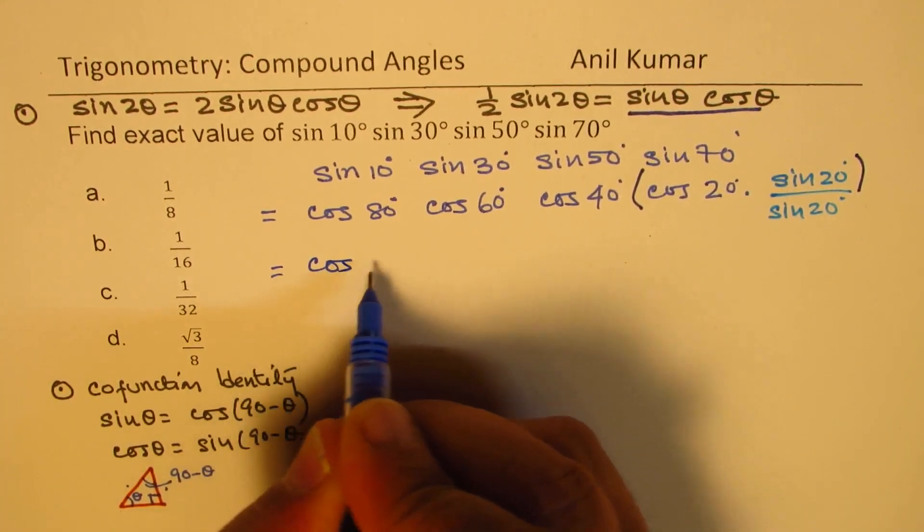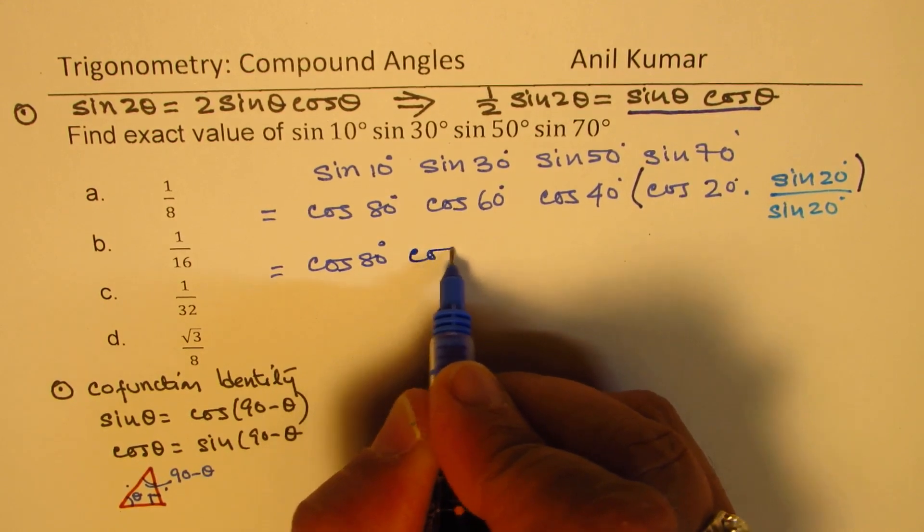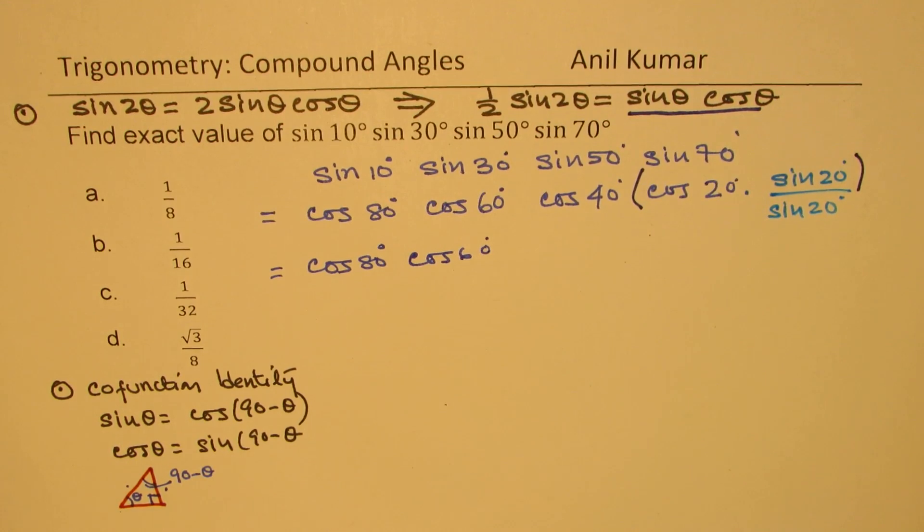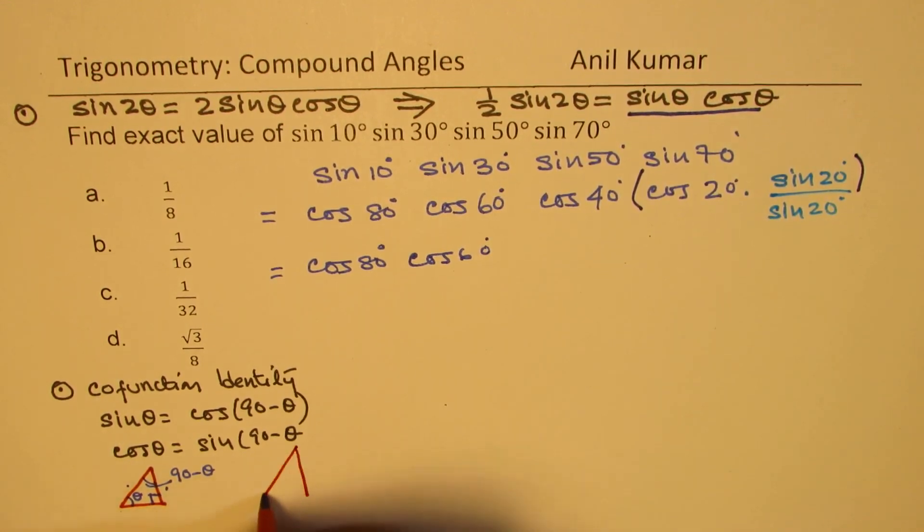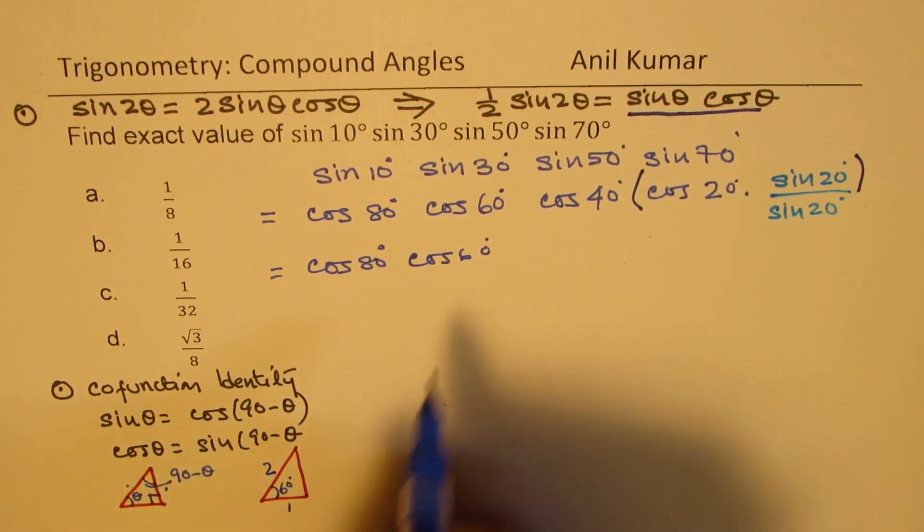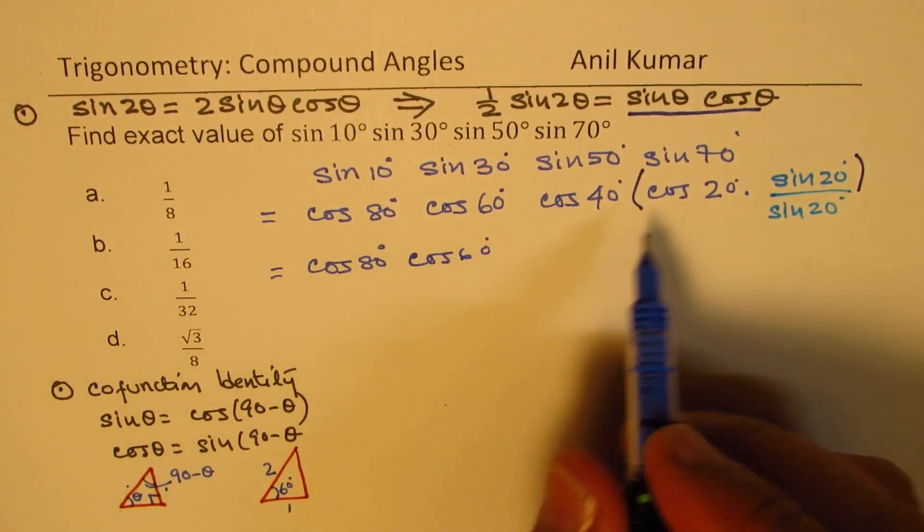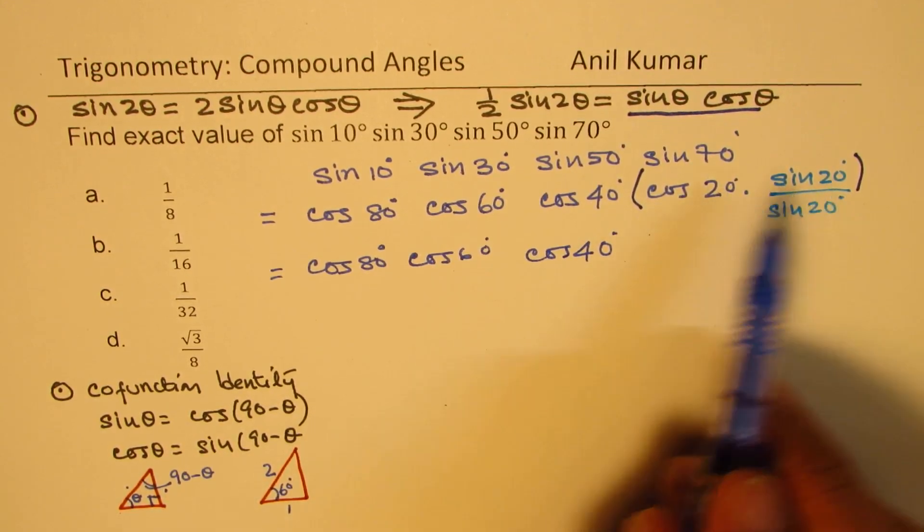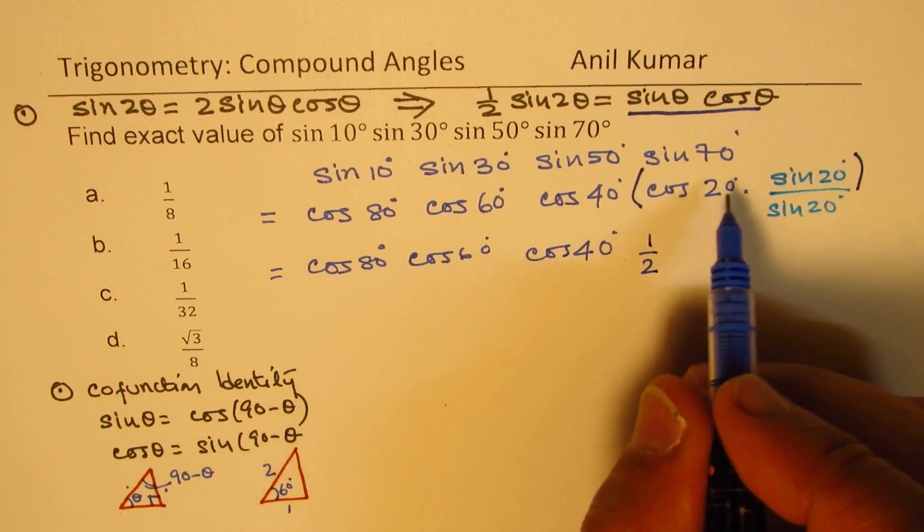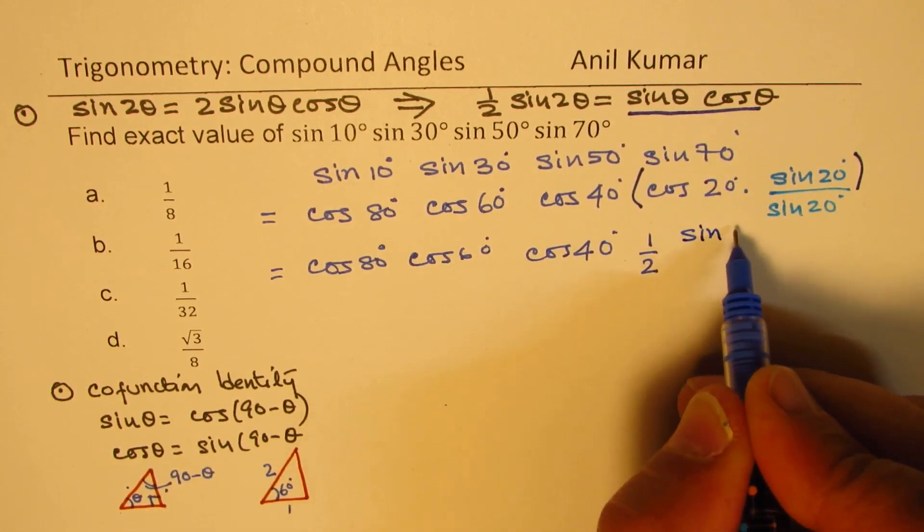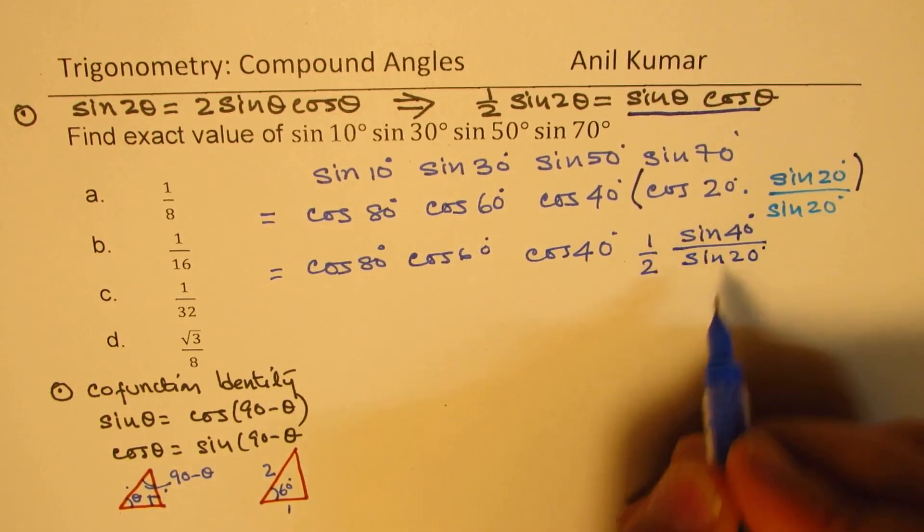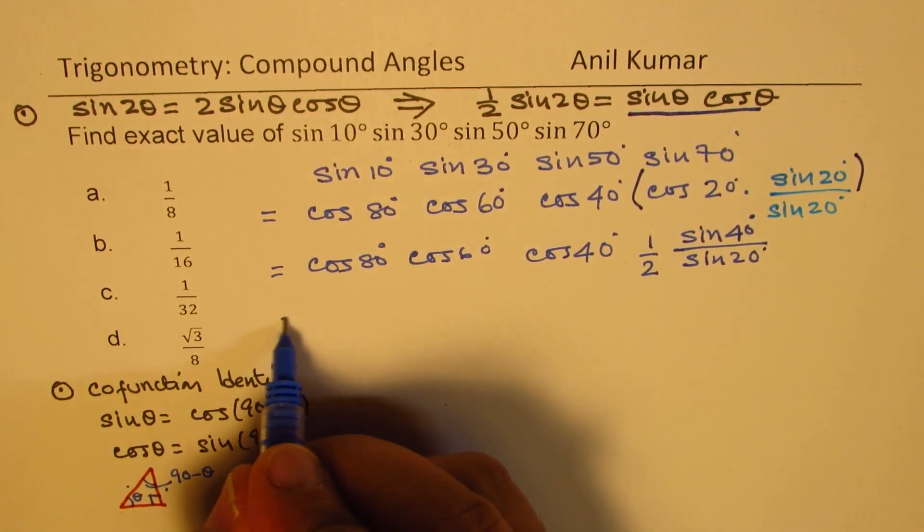Well, cos of 60 degrees, we can place a value for that. It is half. So, if I have this 30-60 triangle and this angle is 60 degrees, then cos of 60 degrees is half. Here, we have cos of 40 degrees. Now, cos 20 sine 20 becomes half of sin 2 theta, which is sin of 40 degrees, and we have denominator of sin 20 degrees now.